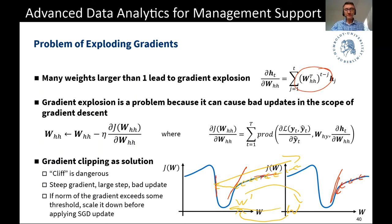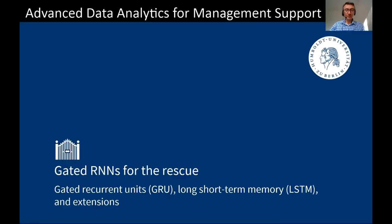Gradient vanishing is a more severe problem. If the gradient vanishes, if it's zero, you can't multiply a zero with a big number to make it bigger. The gradient will remain zero and you won't know in which direction to update your weights. So gradient vanishing is really the problem we need to focus on, and more advanced recurrent neural networks — like the gated RNNs that we are going to explore next — are the ones that try to address this problem of gradient vanishing.